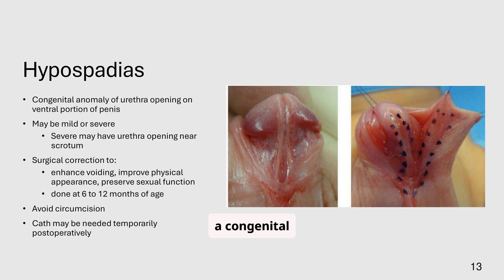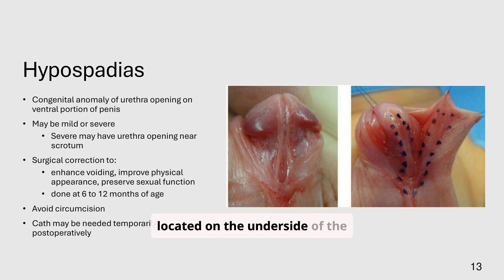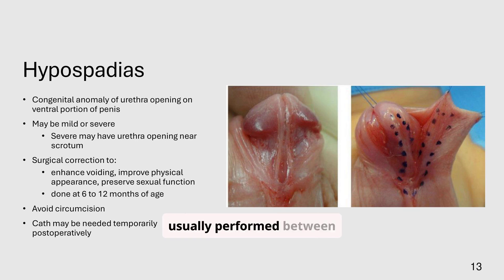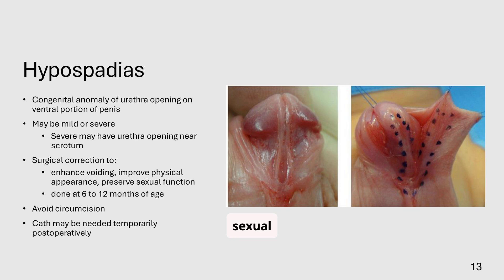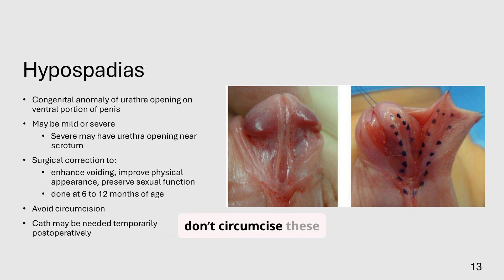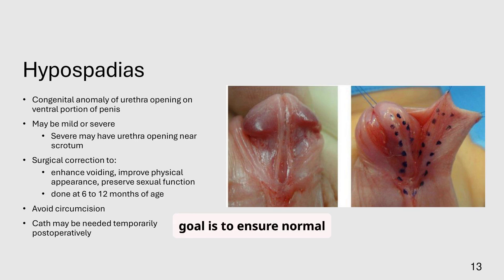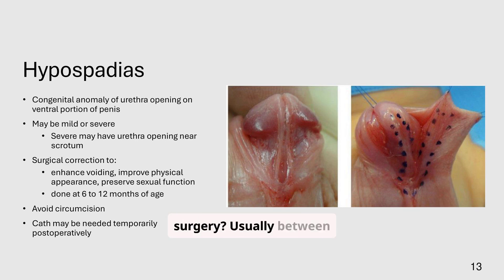Hypospadias is a congenital condition where the urethral opening is located on the underside of the penis. Surgical correction is usually performed between six and twelve months to improve voiding and sexual function. This can range from mild to severe. We don't circumcise these babies early — the foreskin may be used in the surgical repair. The goal is to ensure normal urination and sexual function later in life. Timing for surgery is usually between six to twelve months.